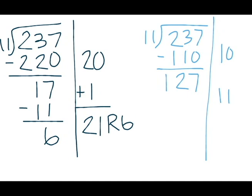11 times 11 is 121. Subtract that from 127 to get 6. I'm going to add my partial quotients together. 10 plus 11 is 21, and I have my remainder 6.